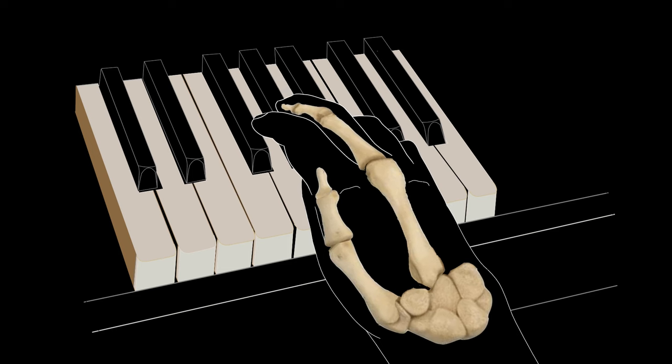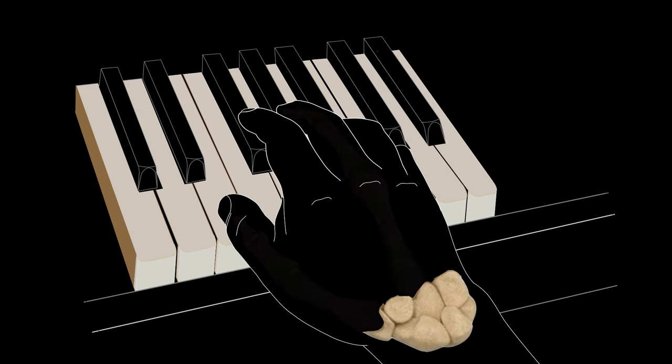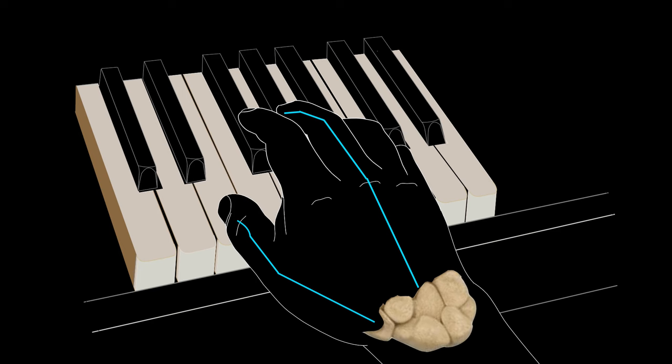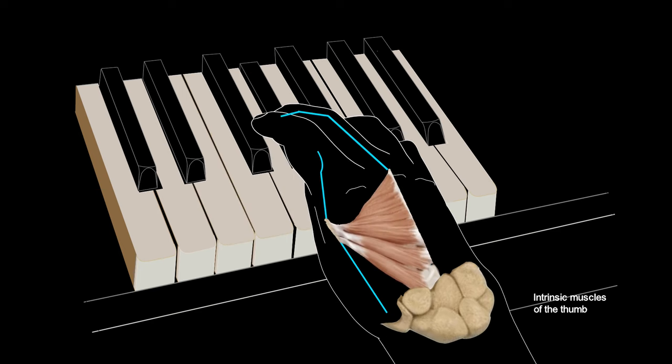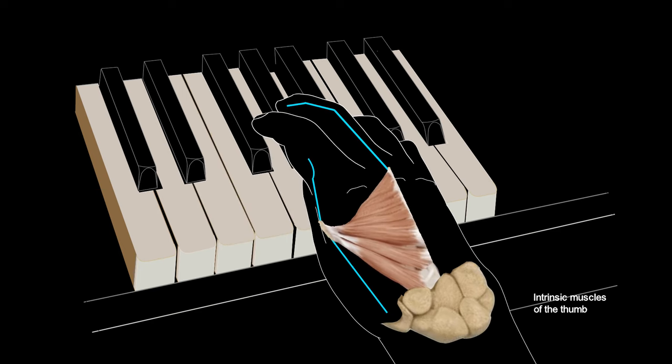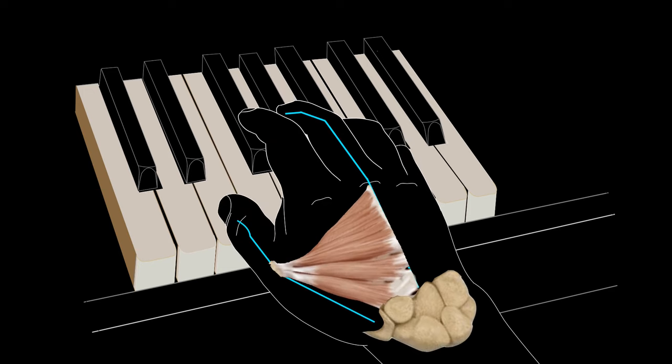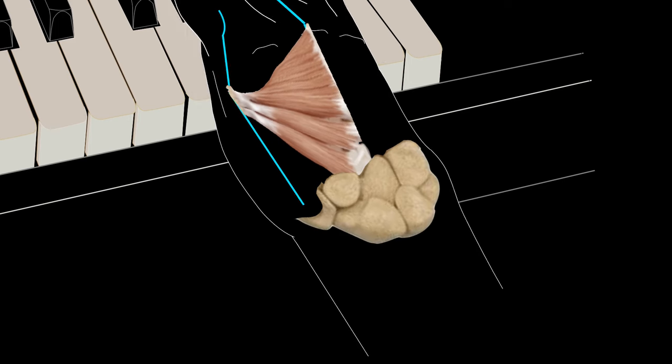The support finger and the thumb make flexible pins that hinge at the wrist, so that the combined action of the muscles helps bring the thumb closer to the target key. As a consequence, a slight tilt of the wrist is expected towards the direction of the scale.